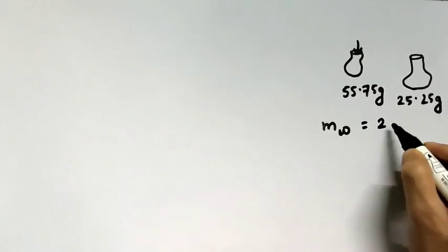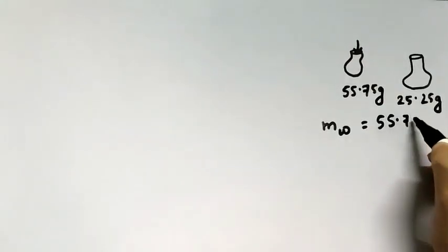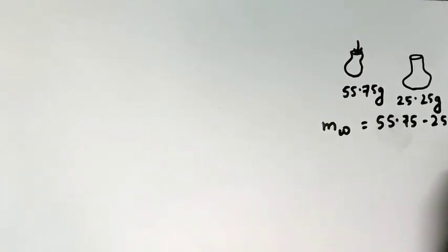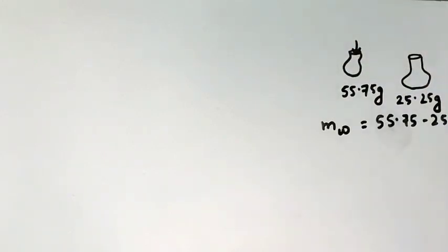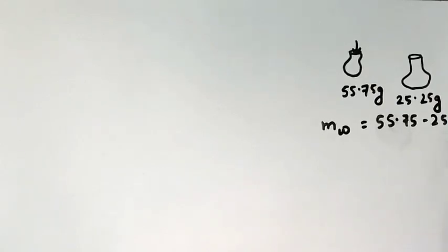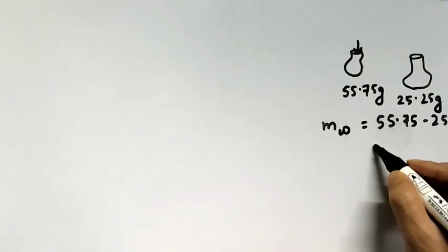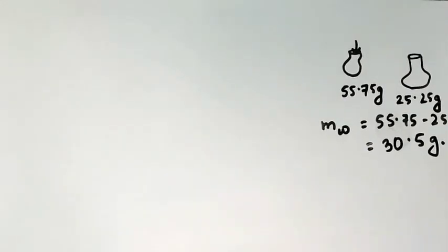The mass of water equals 55.75 minus 25.25. The mass of an empty bottle is 25.25 grams; when water is poured in, the total mass becomes 55.75 grams. So mass of water equals mass of bottle with water minus mass of empty bottle, which gives us 30.5 grams.